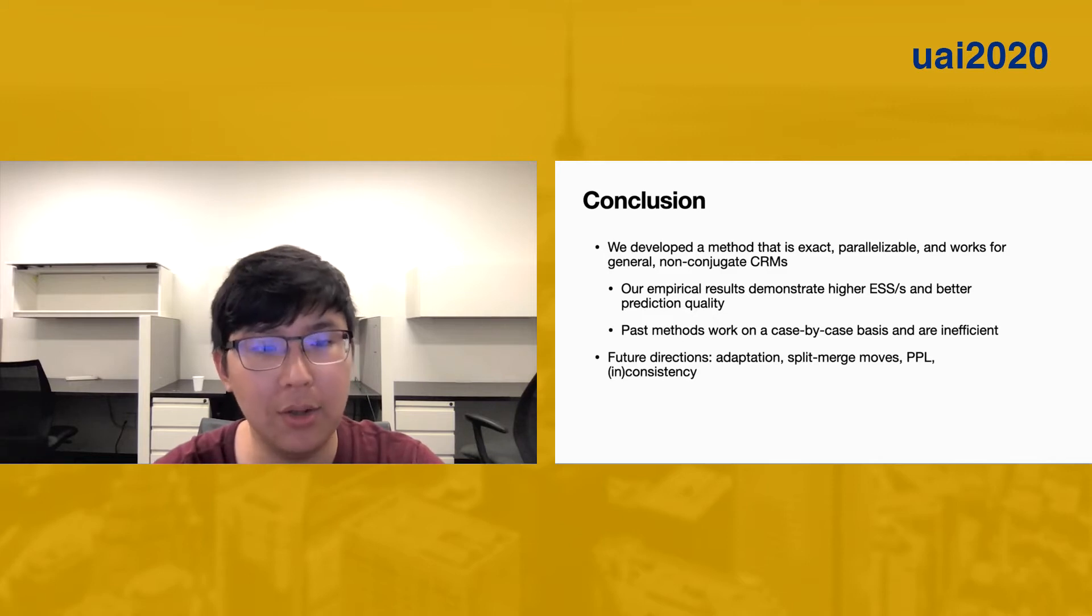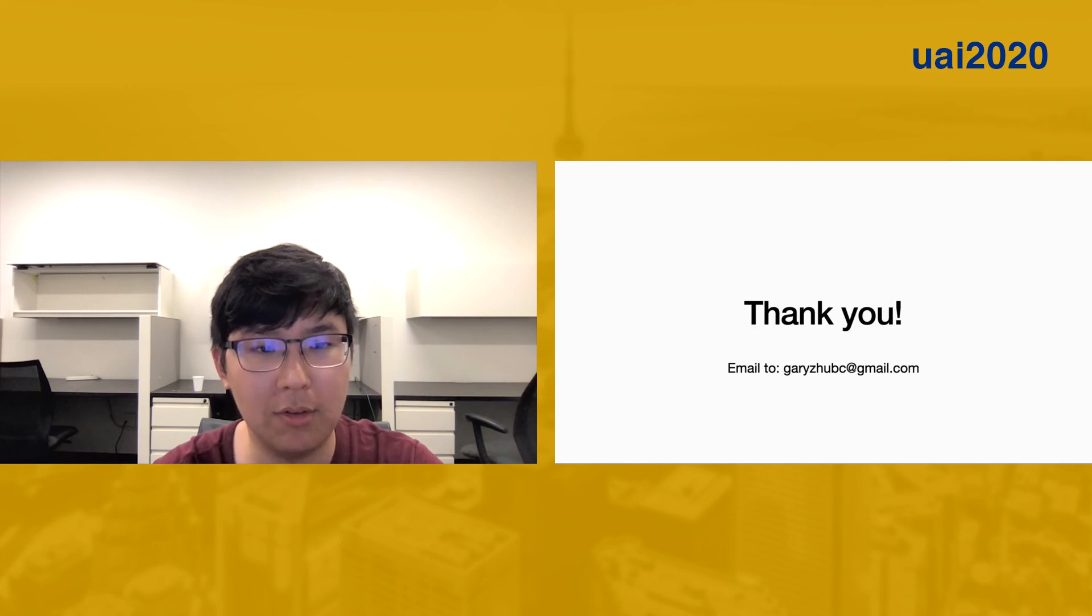So what have we discussed? Inference is hard on trait allocation models with completely random measures as priors. We developed a method that is exact, parallelizable, and works for general non-conjugate completely random measures. Our empirical results demonstrate higher effective sample size per second and better prediction quality. Past methods only work on a case-by-case basis and are inefficient. Future work can be done on adaptation of the slice sampler based on the choice of the deterministic sequence, developing split-merge moves for faster mixing, embedding this algorithm into a probabilistic programming engine, and investigating consistency or inconsistency of nonparametric trait allocation models by simulations. Thanks for your attention.